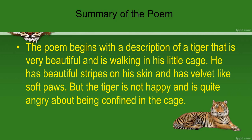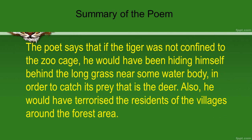The tiger is not happy and is quite angry because he is being confined in the cage. The poet says that if the tiger was not confined to the zoo cage, he would have been hiding himself behind the long grass near some water body. As the second extract reads: 'He should be lurking in shadow, sliding through long grass near the water hole where plump deer pass.' So if he was not confined, he would have been hiding near a water body to catch his prey — the deer.